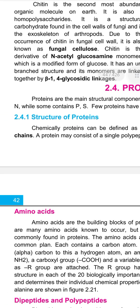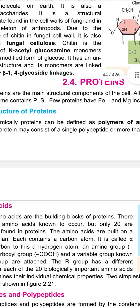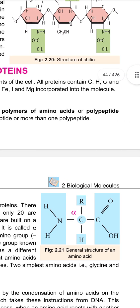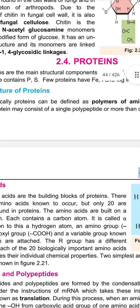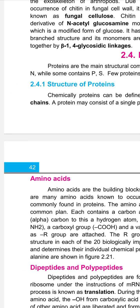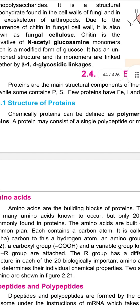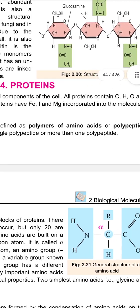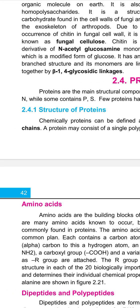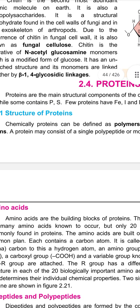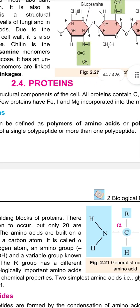Regarding the structure of proteins: chemically, proteins can be classified as polymers of amino acids or polypeptide chains. A protein can consist of a single polypeptide or more than one polypeptide chain.